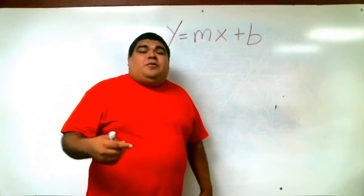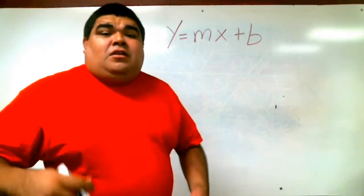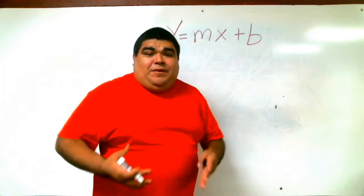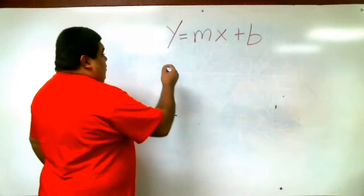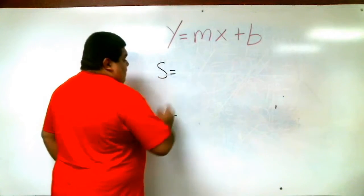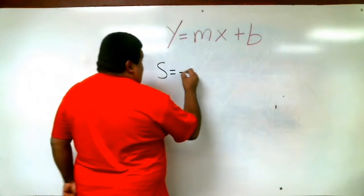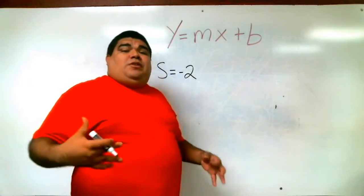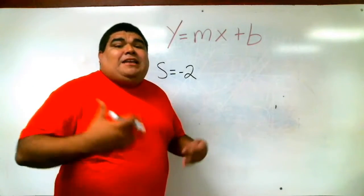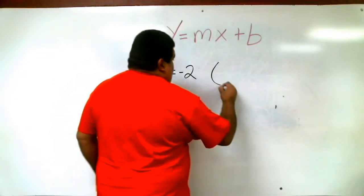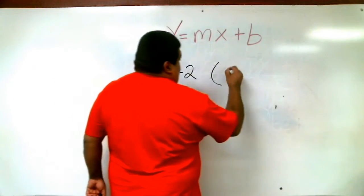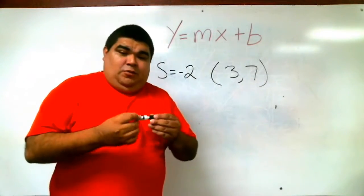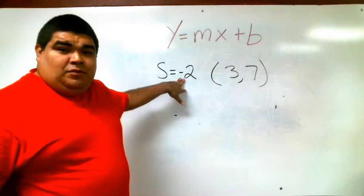All right. The example for today is, luckily, this example already gives us the slope, so we don't really have to find it. The slope equals negative 2, but this line we're going to create, or this equation we're going to create, passes through the point 3 comma 7. That's the point it passes through. The slope is negative 2.